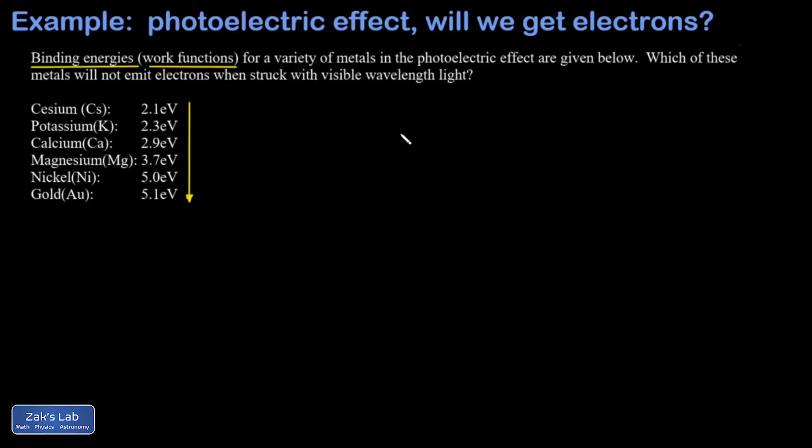What we're looking at in this problem is just the threshold: is my photon energetic enough to remove the electron at all? So we want to focus on the shortest visible wavelength of light. Anything that requires more energy than that to pop an electron off, you're not going to see any emitted electrons when you hit that sample with visible wavelengths of light.